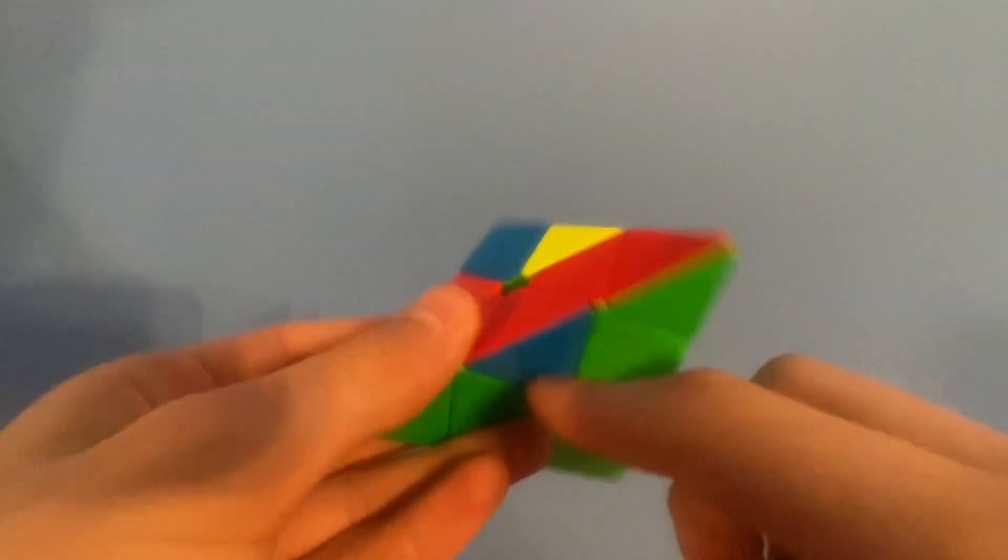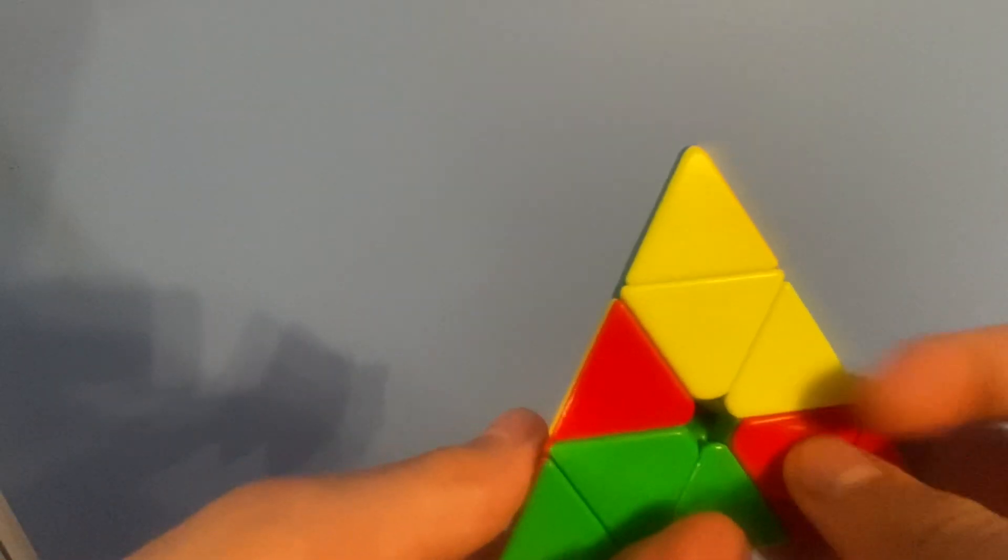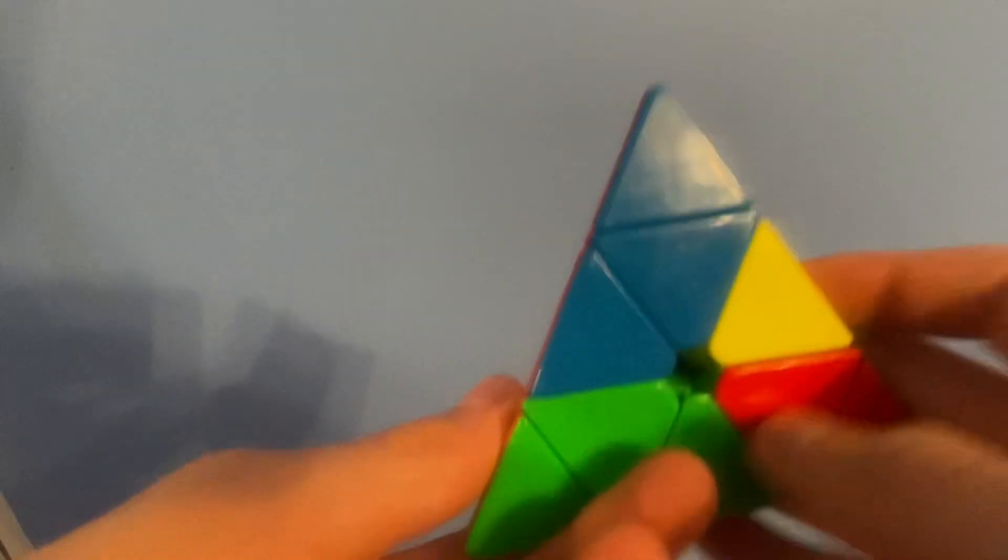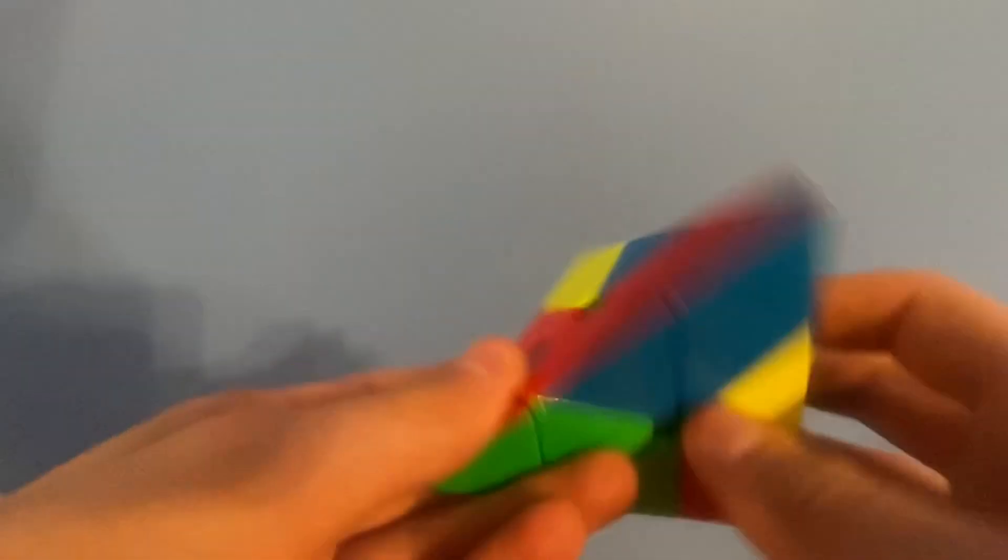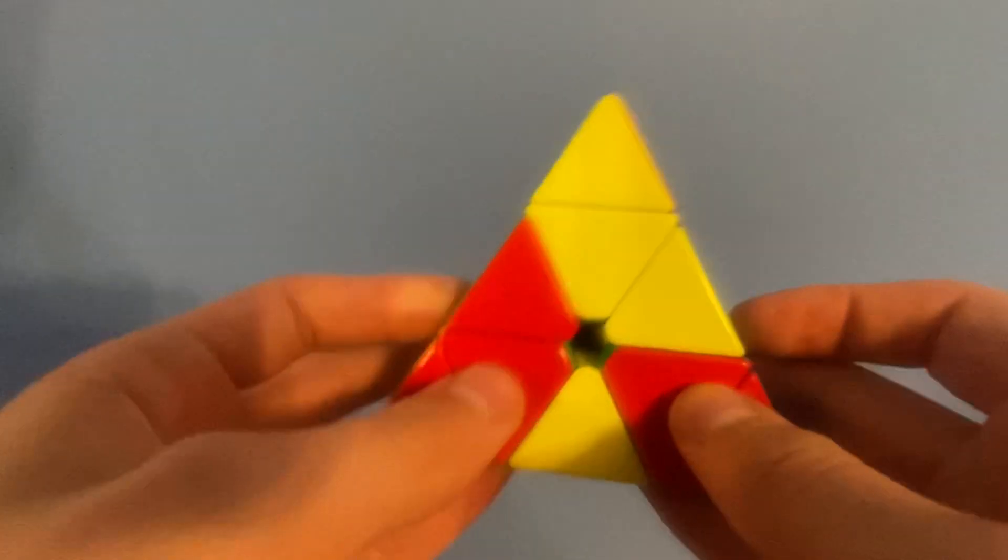Okay, so now I got the blue bottom, the blue center. Now I'm going to put that up, and I'm going to either move the U layer so this edge doesn't come into the bottom. In this case, no matter what I do, it's not going to go to the bottom, so I can do U prime or U, and then I'm bringing it back down.